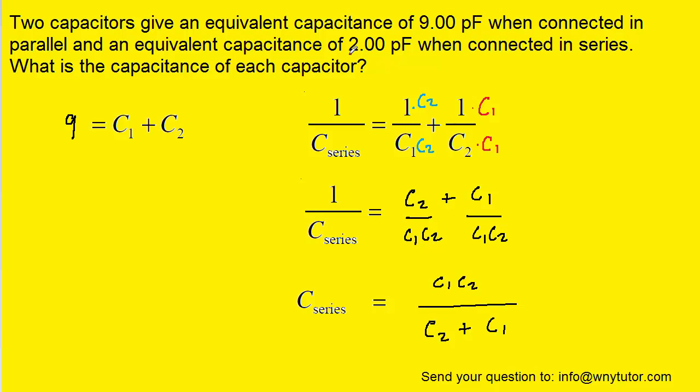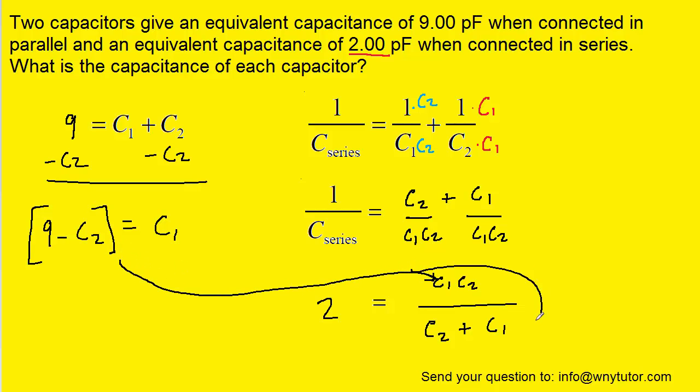Let's remember that the question told us that value was two picofarads, so we can plug two in now for the C series. So next it's going to be useful to solve the first equation for C1. And of course, we can do that by subtracting C2 from both sides of that equation. And next, what we can do is take that expression for C1 and substitute it into both here in this equation, and also right there.